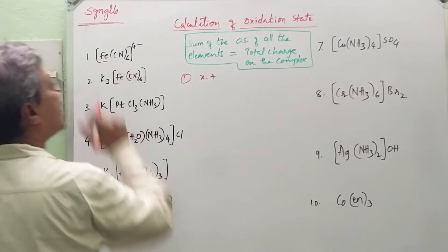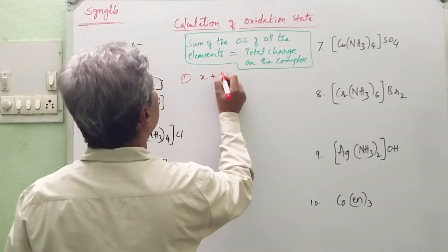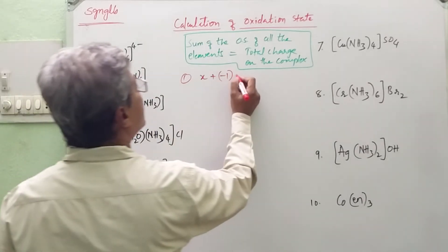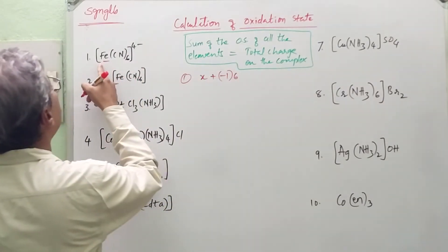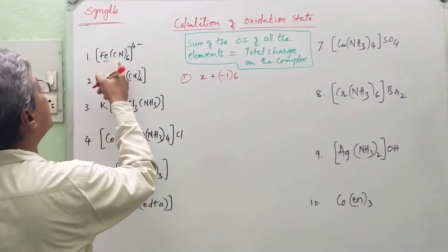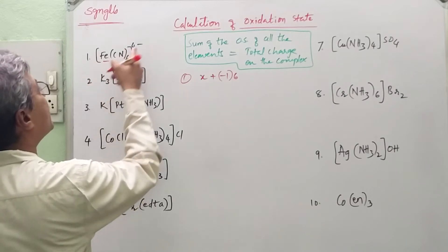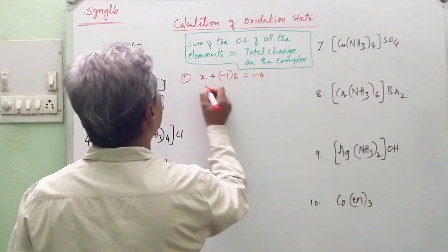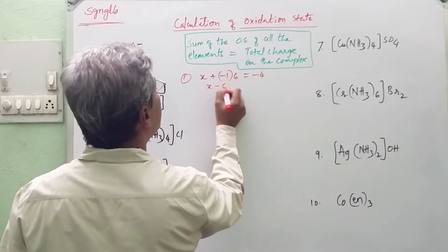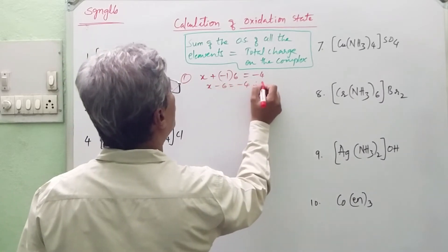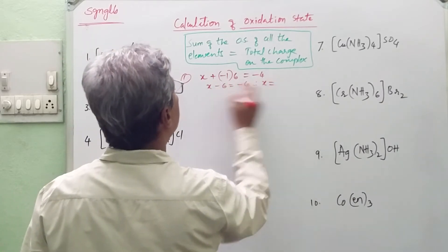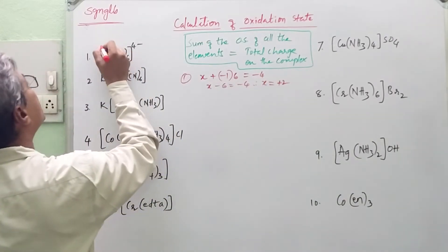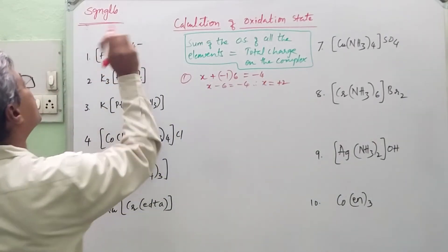Here Cl is a negatively charged ligand whose charge is minus 1. There are 6 Cl ligands. The sum of the charges of all elements must equal the total charge, which is minus 4. This implies that x + (−1 × 6) = −4, so x − 6 = −4, therefore x = +2. The oxidation state of the metal is +2.